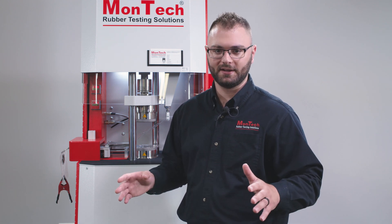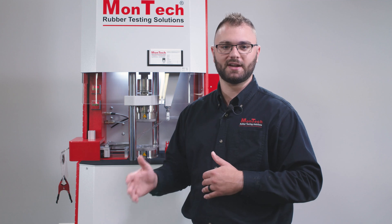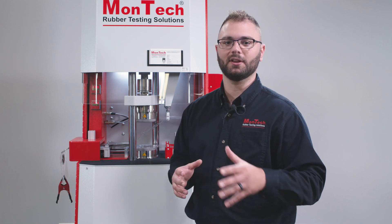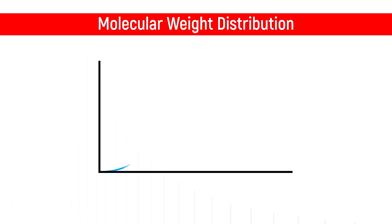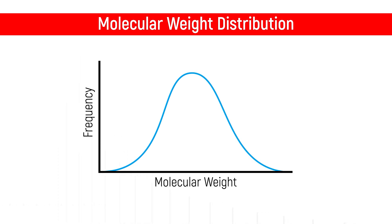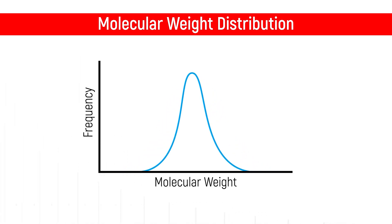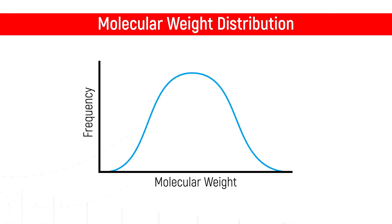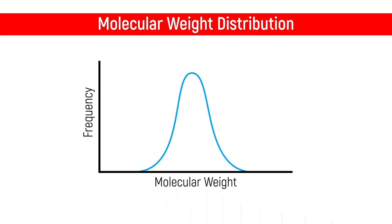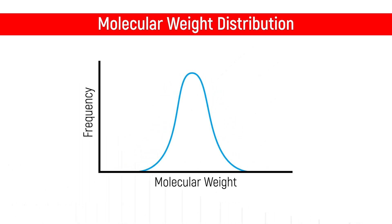However, average molecular weight does not indicate the range of sizes specifically — that is left for molecular weight distribution. Molecular weight distribution is a statistical representation of how narrow or broad the bell curve of molecular weights would be. If the bell curve is wide, you statistically have a variety of polymer chain sizes within the compound. If the bell curve is narrow, you statistically have a tighter group of polymer sizes.